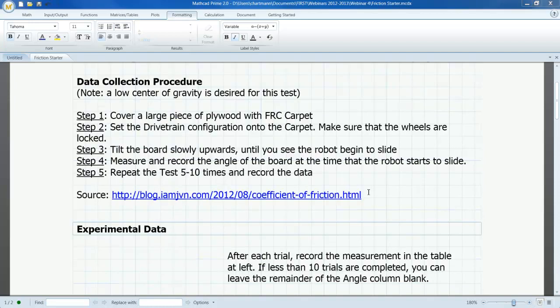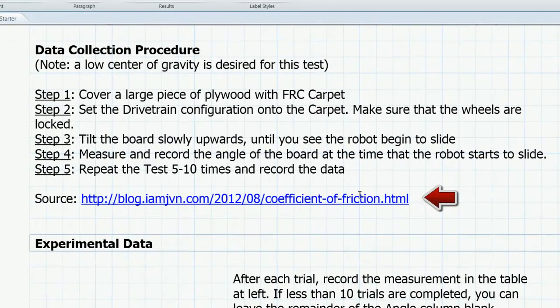In many activities where small vehicles or robots are built, performance is related to a coefficient of friction between the vehicle and the surface on which the vehicle is deployed. This example illustrates a technique for determining this coefficient. I have borrowed the procedure in this example from a post to the Chief Delphi First Robotics Community. The URL is shown here.